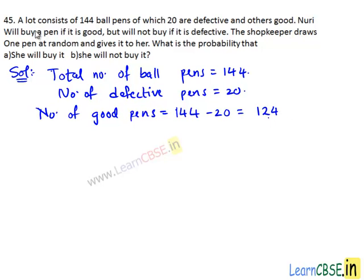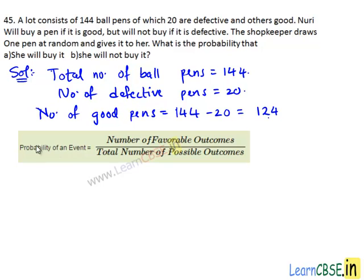Nuri will buy a pen if it is good but will not buy if it is defective. The shopkeeper draws one pen at random and gives it to her, and we need to find the probability that she will buy it and she will not buy it. We know that probability of an event is the ratio of number of favorable outcomes of the event to the total number of possible outcomes.